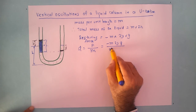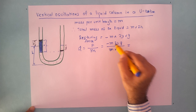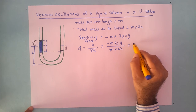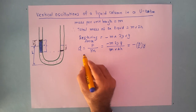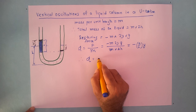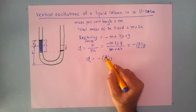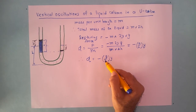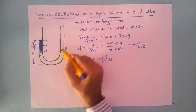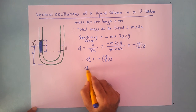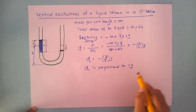The total mass of the liquid is m into 2h. So the acceleration gives us m cancelling and 2 cancelling, leaving us with minus g by h into y. Therefore the acceleration α equals minus g/h into y. Here g and h are constant — g is acceleration due to gravity and h was the initial height of the liquid column. What changes is y, the displacement of the liquid column.